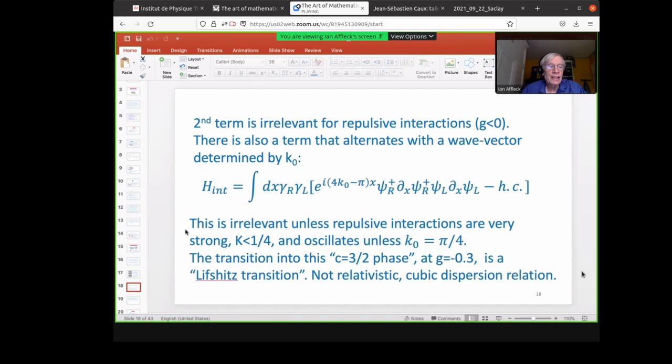So we get the simultaneous transition where K goes to one quarter, k0 goes to pi over 4 simultaneously. And we calculated the Luttinger parameter K and the wave vector k0 using DMRG. We got the finite size spectrum and came to this remarkable conclusion.